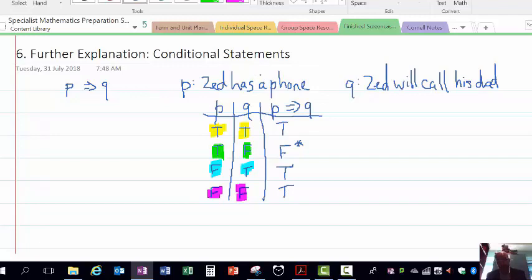Remember, the initial compound statement was if Zed has a phone, then Zed will call his dad. Well, Zed did not have a phone and Zed did not call his dad, so that gets a value of true.